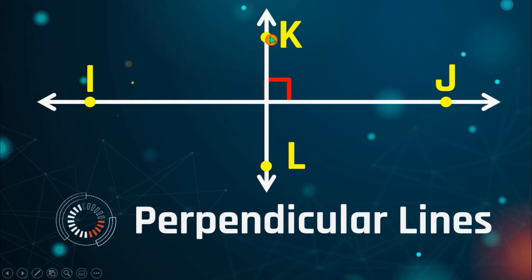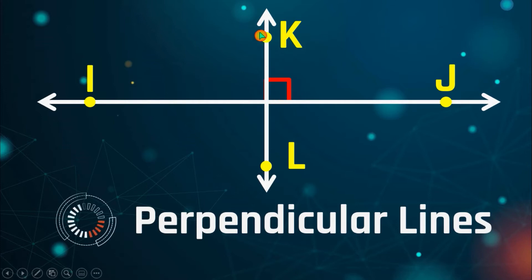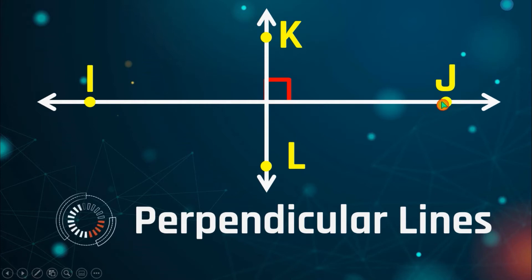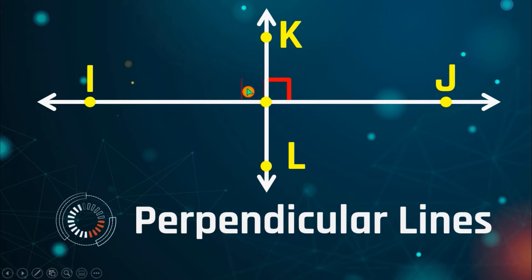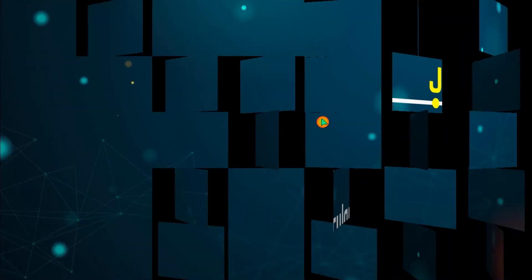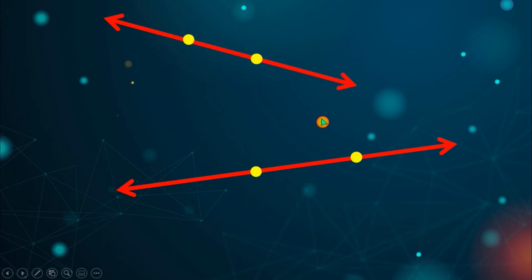That special square symbol tells us there is a right angle — imagine a rectangle or square, it's like that. So line KL and line AJ are perpendicular lines, and out of perpendicular lines, all the angles formed are automatically 90 degrees. Next, let's go to the last kind of lines, which is skew lines.